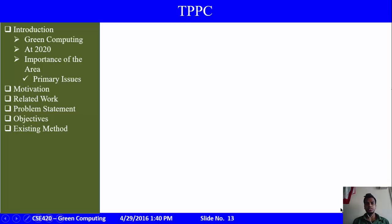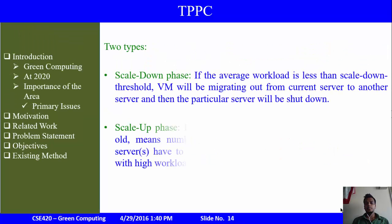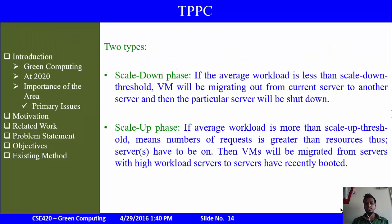The second resource allocation algorithm is TPPC, which stands for Two Phases Power Convergence Algorithm. TPPC is specifically aimed at cutting down power consumption and carbon emissions in cloud data centers. It is an optimized version of the round-robin algorithm, proposed to balance virtual machines running on servers and cut down power consumed by these servers. TPPC is scaled down into two phases.